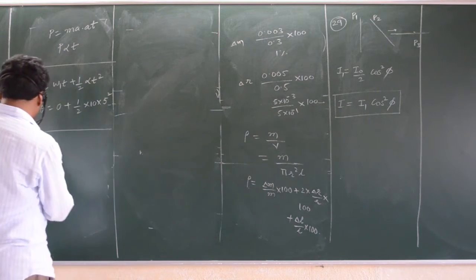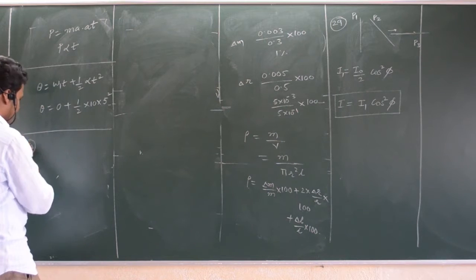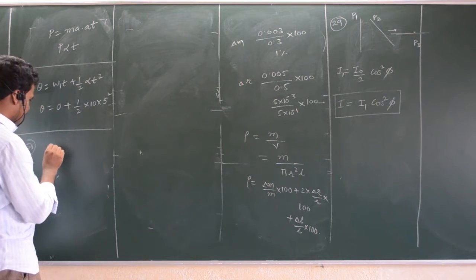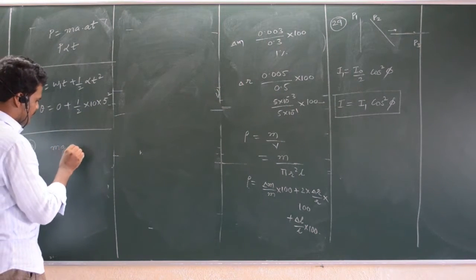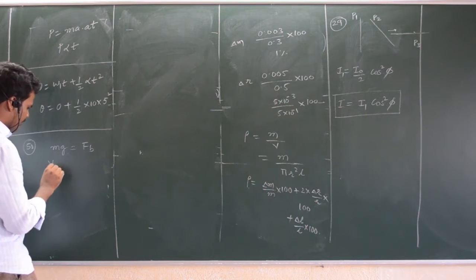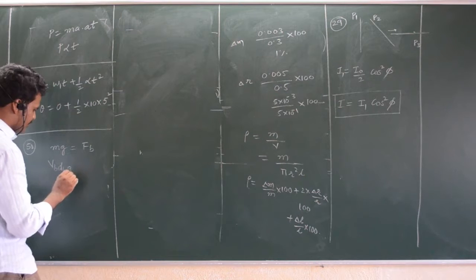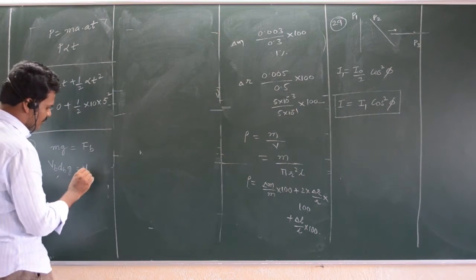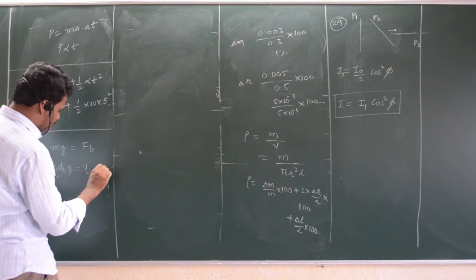Next question number 50. When body is floating, total mass is balanced by buoyancy force. So, this is volume of the body into density of body into G is equal to volume of the body inside liquid into density of liquid into G.